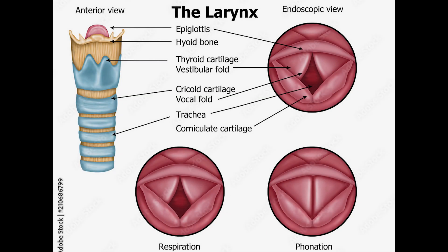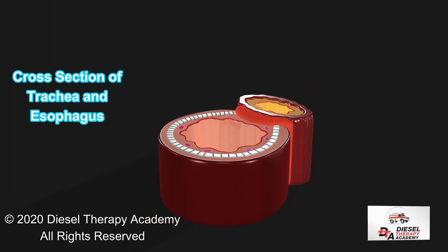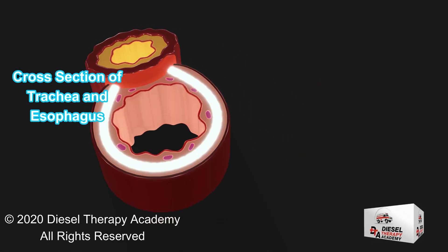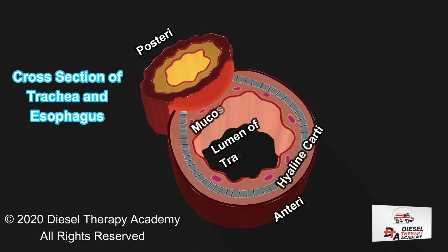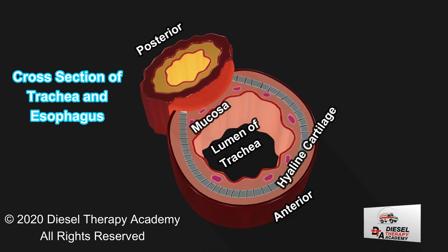The thyroid cartilage is the Adam's apple. The epiglottis acts like a trapdoor to keep food and other particles from entering the larynx. The trachea, commonly called the windpipe, is the main airway to the lungs. It divides into the right and left bronchi at the level of the fifth thoracic vertebra, channeling air to the right or left lung. The hyaline cartilage in the tracheal wall provides support and keeps the trachea from collapsing. The posterior soft tissue allows for expansion of the esophagus, which is immediately posterior to the trachea.